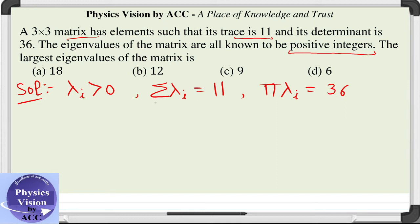By making use of these properties, let us split lambda 1, lambda 2, lambda 3. Since their product - all are greater than 0 - and their product is equal to 36.